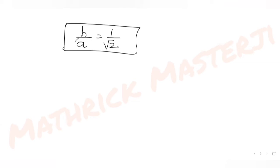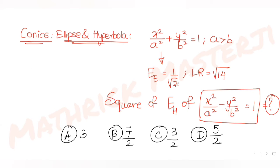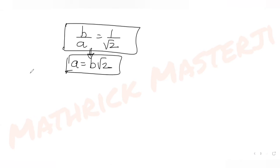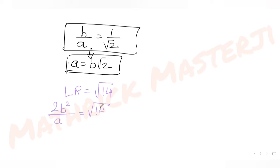From b/a = 1/√2, we get a = b√2. Now using the other given condition: the length of the latus rectum is √14. The formula for the latus rectum of an ellipse is 2b²/a, so 2b²/a = √14.